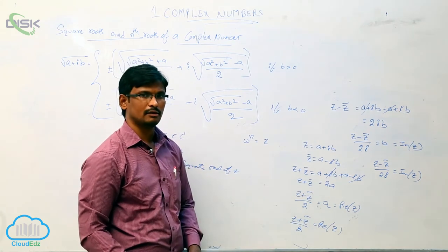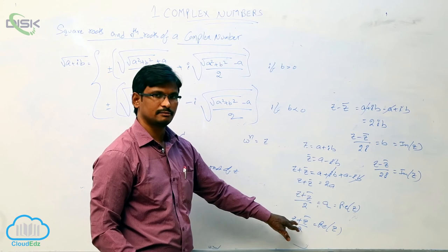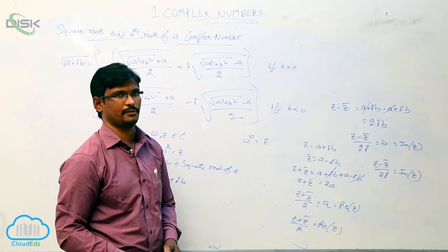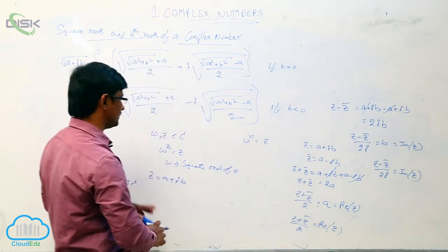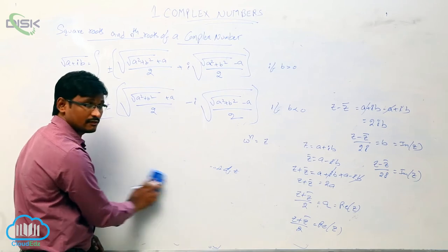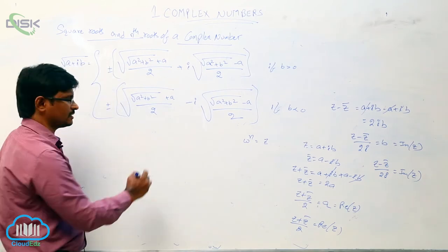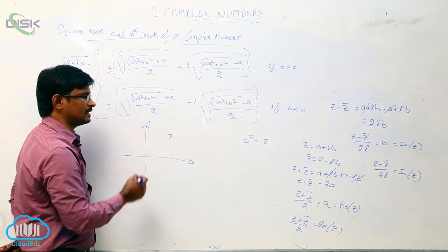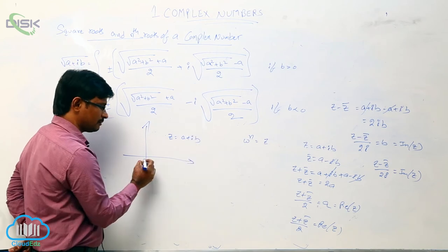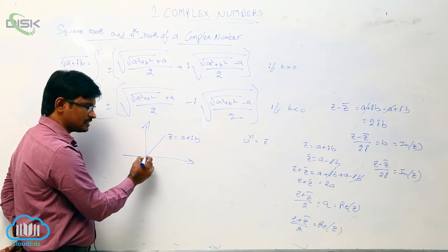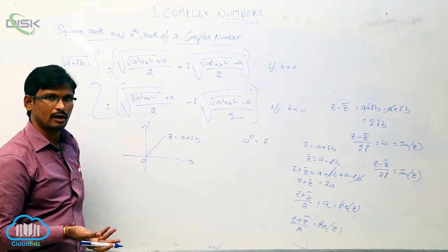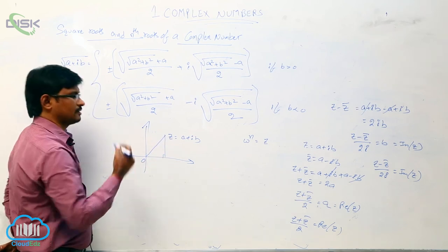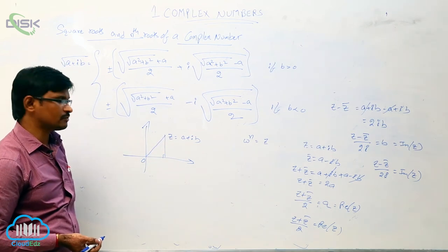If they ask to find the real part or imaginary part of Z, we can use Z and Z̄ with either of these two properties. Next, we will discuss the modulus of the complex number. Z equals A plus iB is a complex number, and the distance from the origin to this point Z in the Argand plane is called the modulus of the complex number.